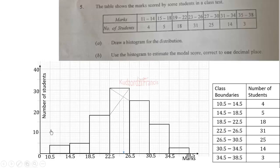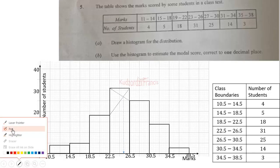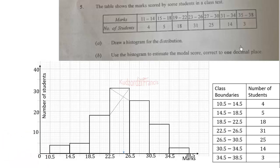That means the modal score from the table is 25.3. From the graph I drew, I had 25.3.